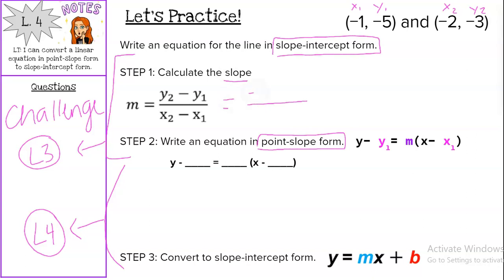And we get y2 is negative 3 minus y1 is negative 5. Over on the bottom, we do x2, which is negative 2, minus x1, which is negative 1. And then perform those operations, negative 3 minus negative 5 or plus 5 is 2. Negative 2 minus negative 1 or negative 2 plus 1 is negative 1. Negative 2 divided by negative 1 is negative 2. So our m equals negative 2.